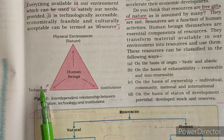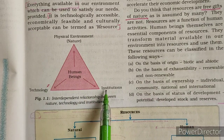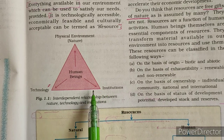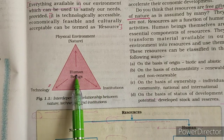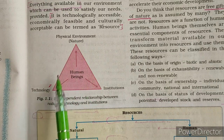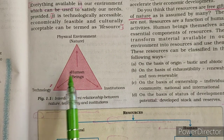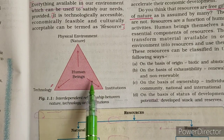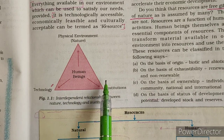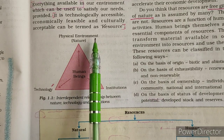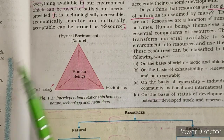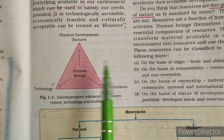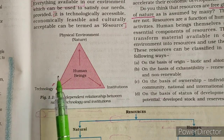By using technology, we extract that raw material and then we generate institutions and industries. So human beings interact with nature with the help of technology, and by extracting raw material, we send it to institutions. We use institutions to transform that raw material into a resource. Remember the word transform — we transform raw material with the help of technology into resource.